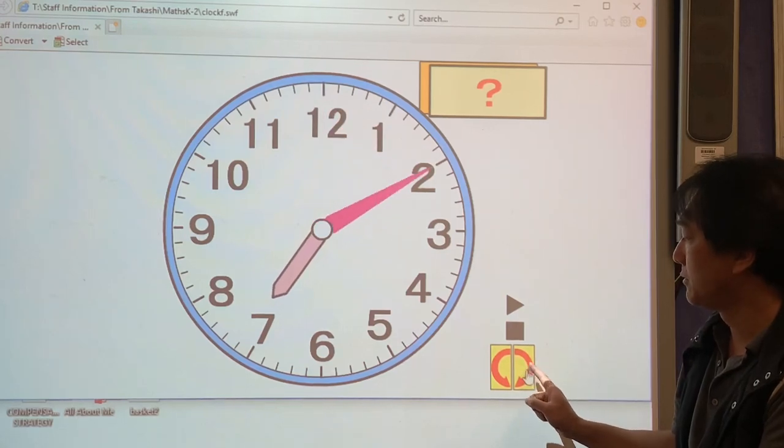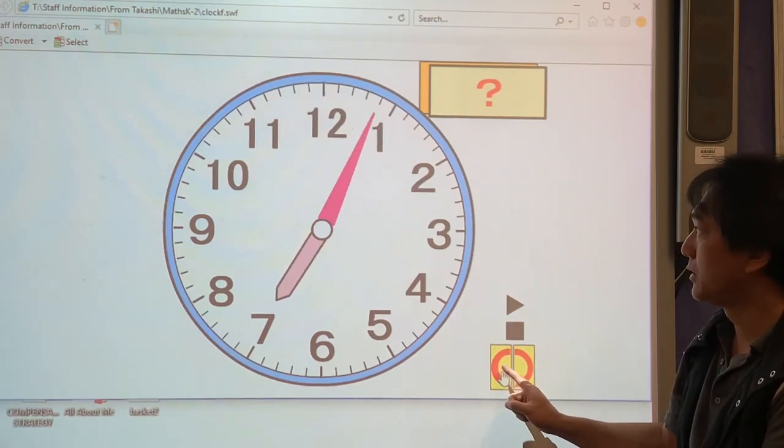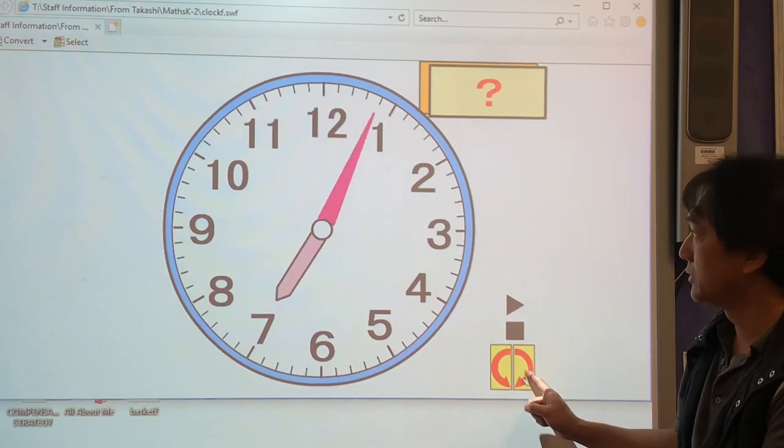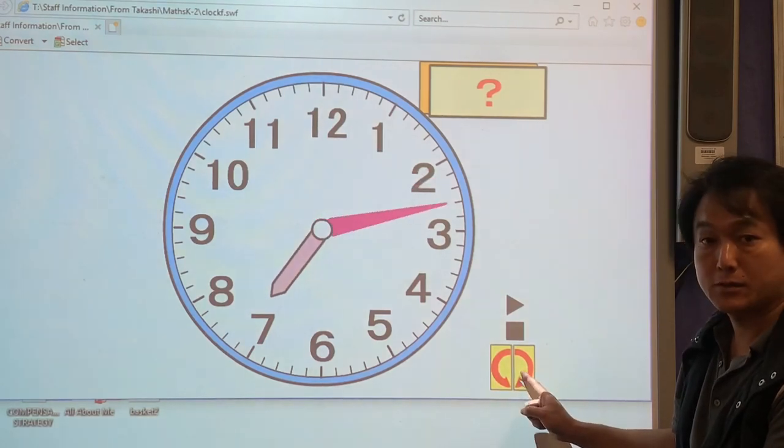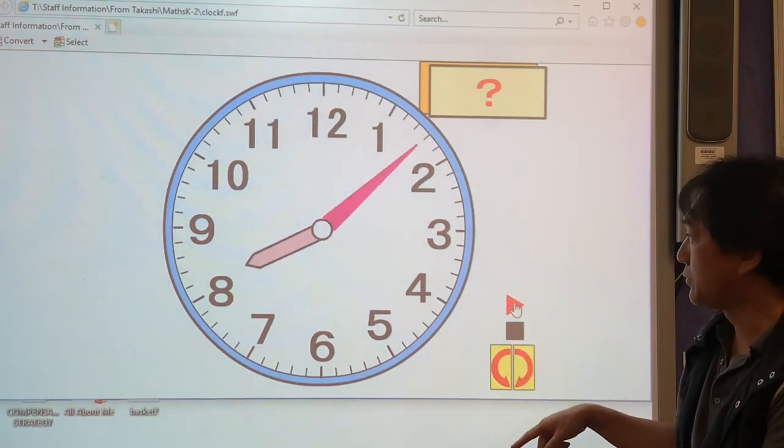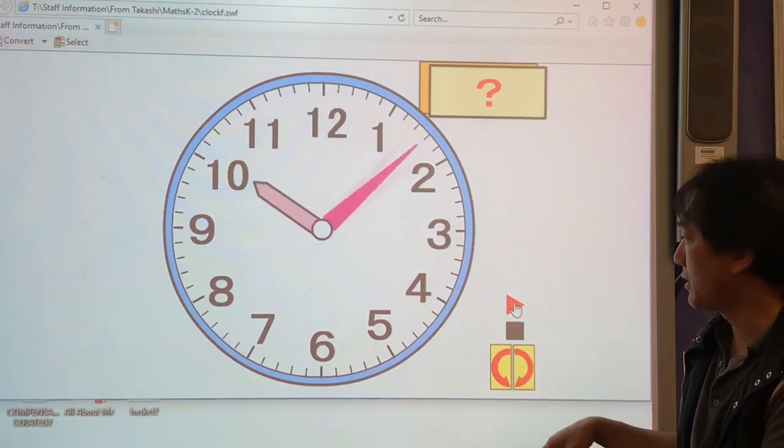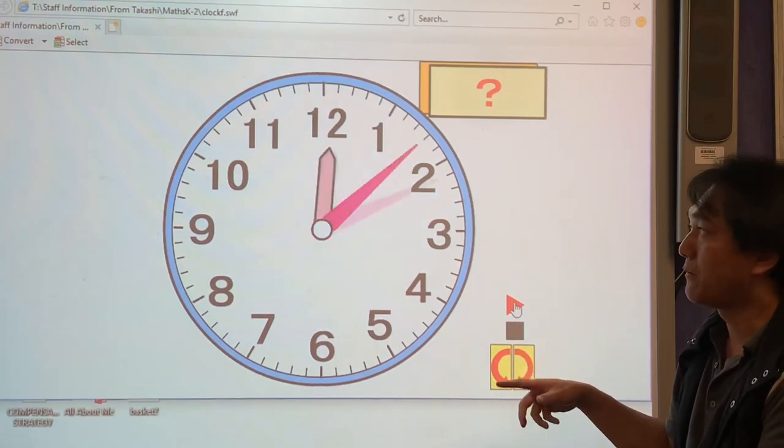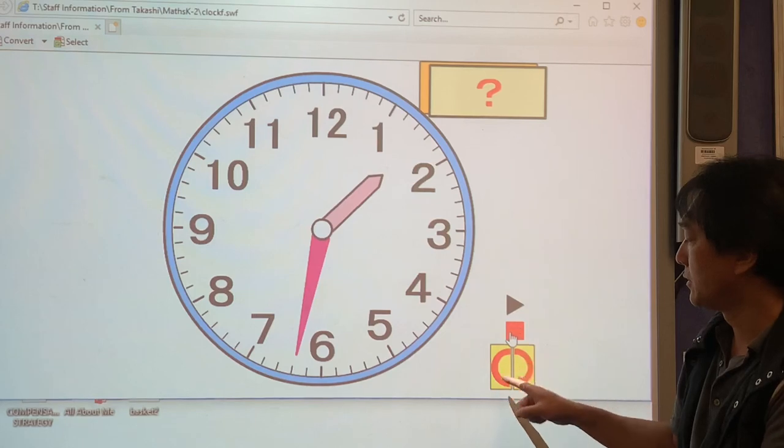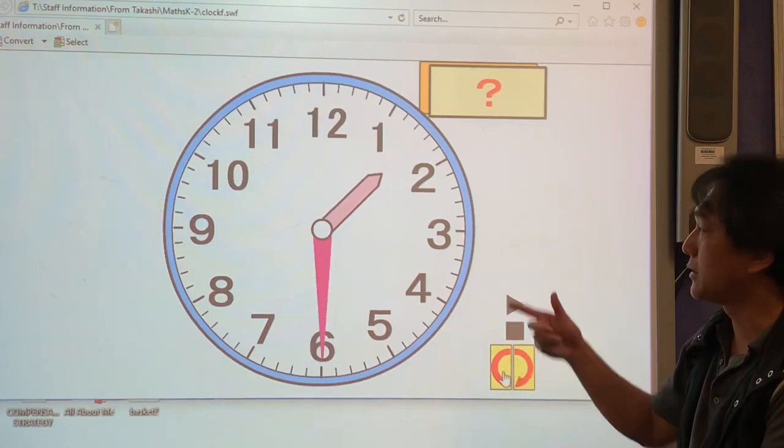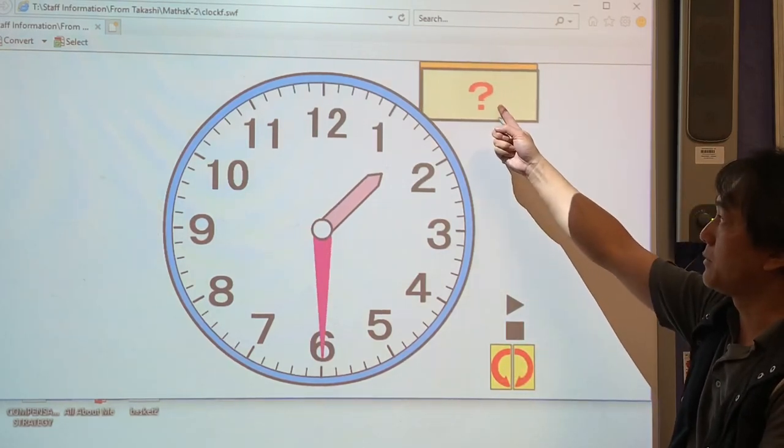So for example, if we want to practice with 30 minutes or half an hour times, you can just adjust, then you can practice.